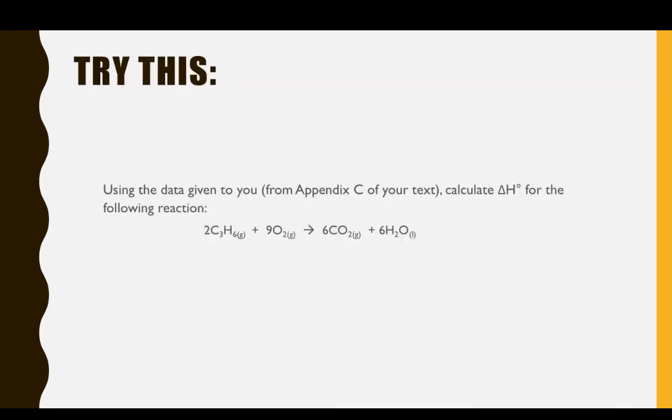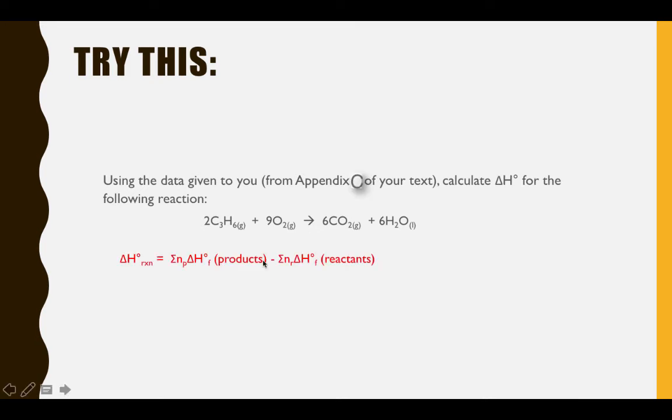Let's look at an example together. You're going to need Appendix C in your textbook in order to do this problem. So take a minute to pull out your textbook and turn to page 1059, Appendix C. In order to find the delta H for this reaction, let's start by totaling up the sum of the delta H's of formation of the products and the sum of the delta H's of formation of the reactants. I recommend doing this in two separate steps and then subtracting.